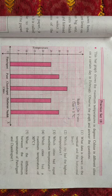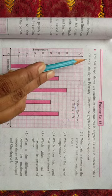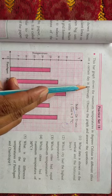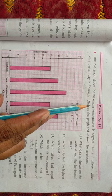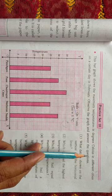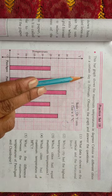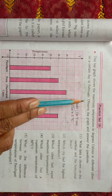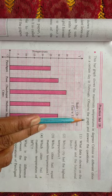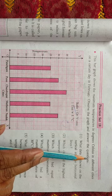Assalamualaikum dear students, today we are learning about practice set number 18. This bar graph shows the maximum temperature in degrees Celsius in different cities on a certain day in February. Observe the graph and answer the questions.